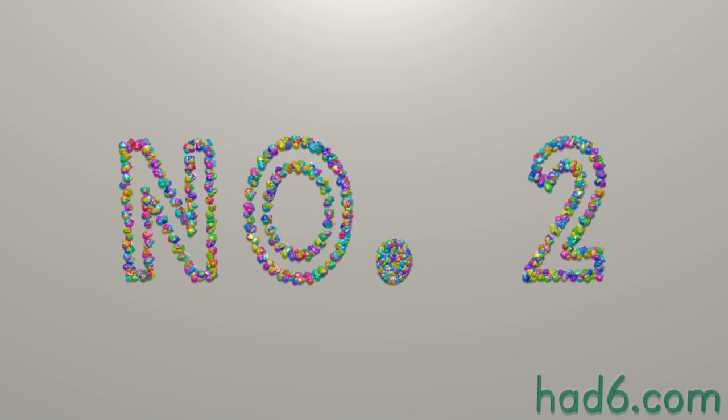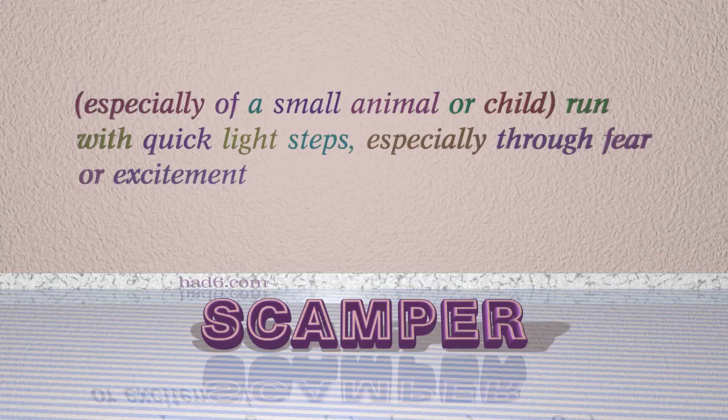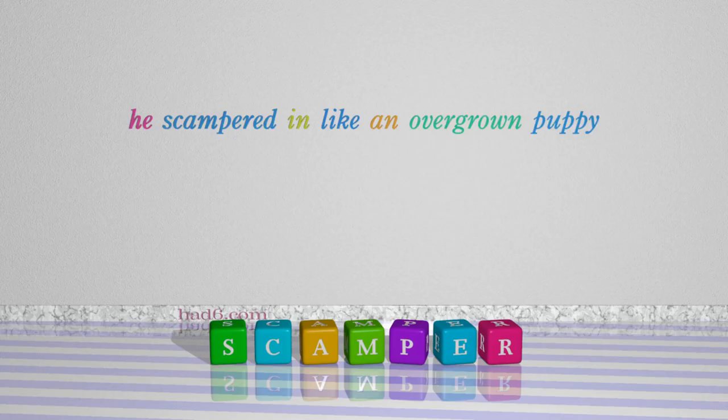Number 2: Scamper. Which means, especially of a small animal or child, run with quick light steps, especially through fear or excitement. For example: He scampered in like an overgrown puppy.